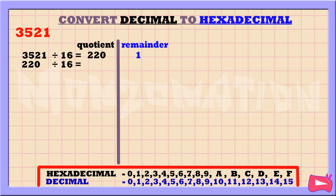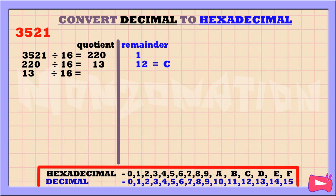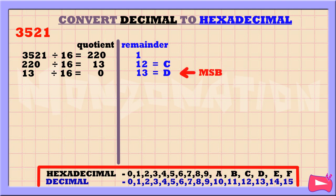Now let's take the quotient and divide it by 16. 220 divided by 16 is 13, remainder 12. The hexadecimal value of 12 is C. Let's continue dividing until the quotient becomes 0. 13 divided by 16 is 0, remainder 13. The hexadecimal value of 13 is D. Once the quotient is 0, we stop. At the bottom is the MSB, at the top is the LSB. Reading remainders from bottom to top, the hexadecimal equivalent of 3521 is DC1 base 16.